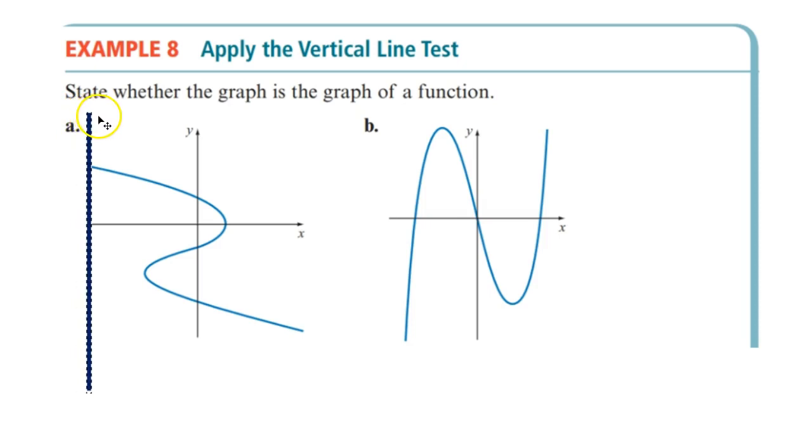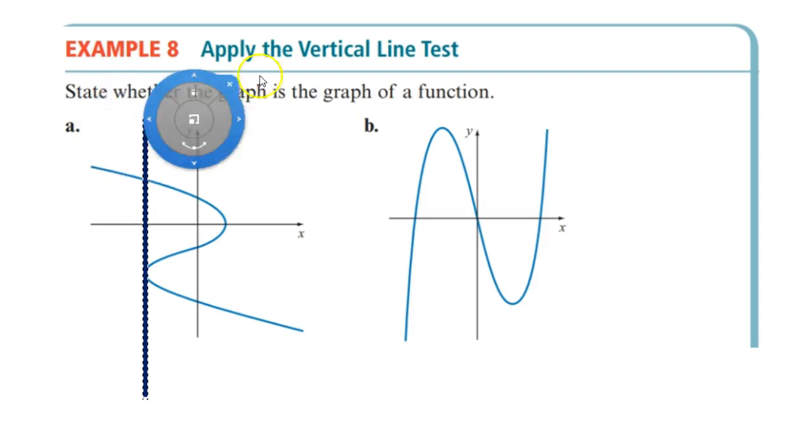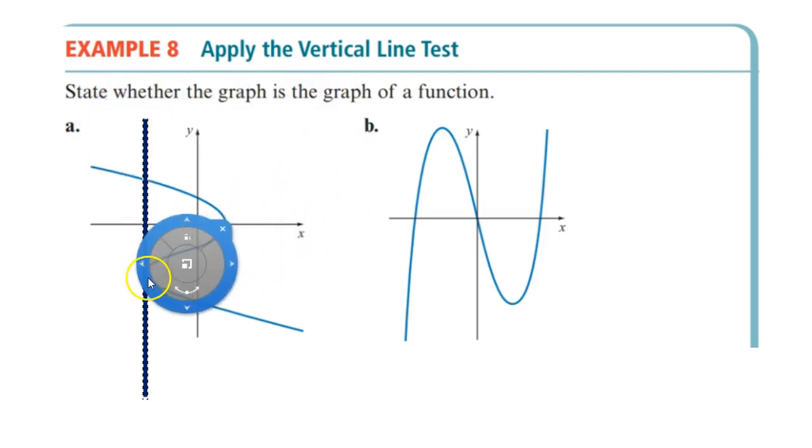So we can start moving this across, and notice it's crossing at one location right now. But all of a sudden, we notice right here, right when we move any further right, at this specific x value it's crossing at more than one place. We notice that it's crossing here, ignore this little plot thingy, and right down here.